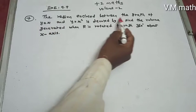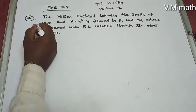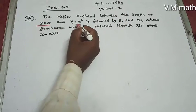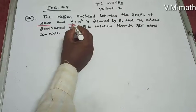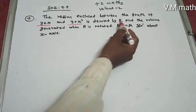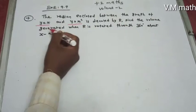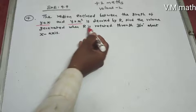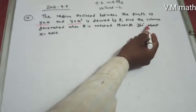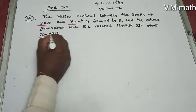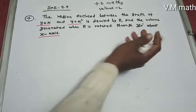The region enclosed between the graph of y equals x and the graph of y equals x squared, the curve denoted by R. Find the volume generated when R is rotated through 360 degrees about the x-axis.